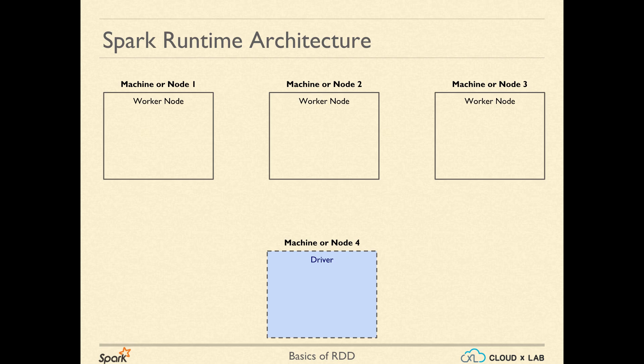At the core of Spark, it is a master-slave architecture made of two kinds of nodes: driver and worker. There is only one driver and workers are many. While workers execute the workload, the driver launches the workload and coordinates between the user and the workers. The user interacts with the driver, and the driver interacts with individual workers.